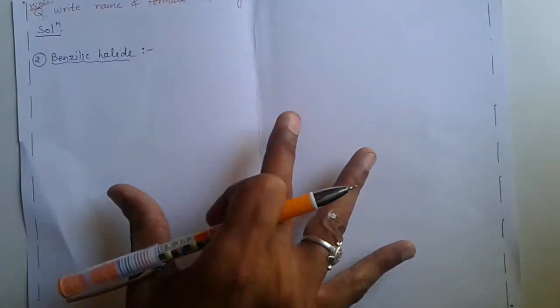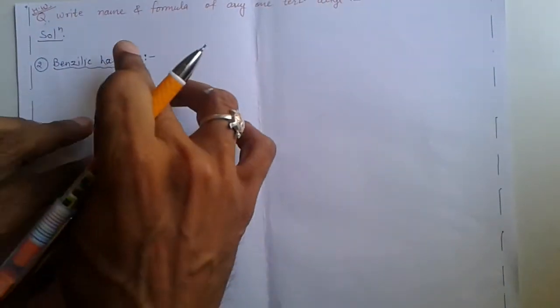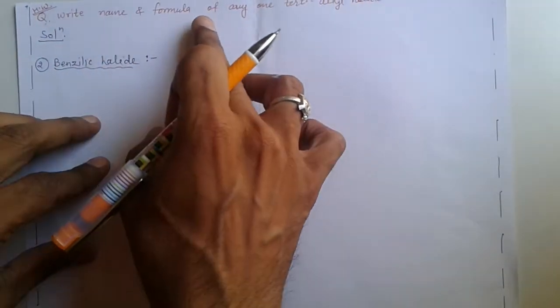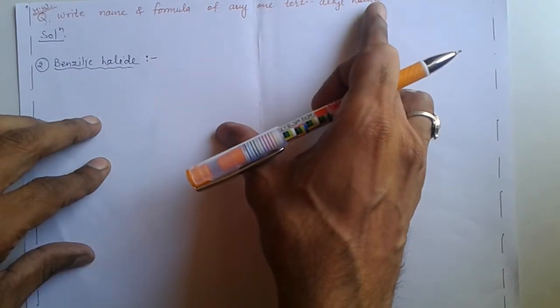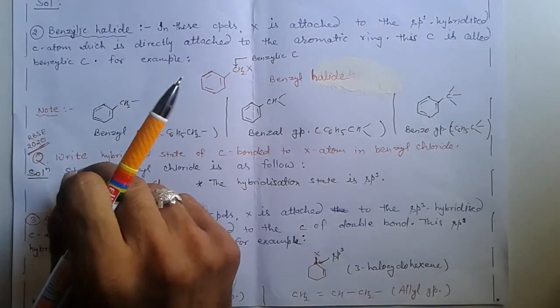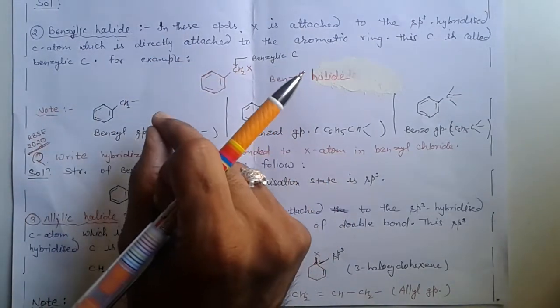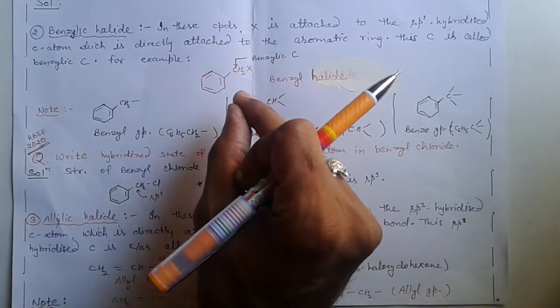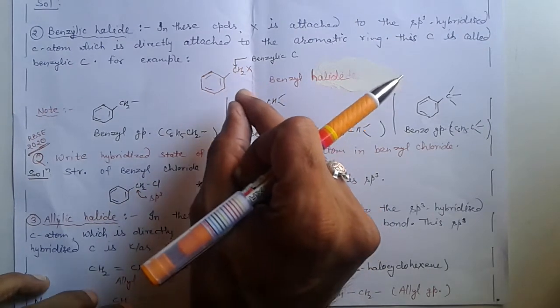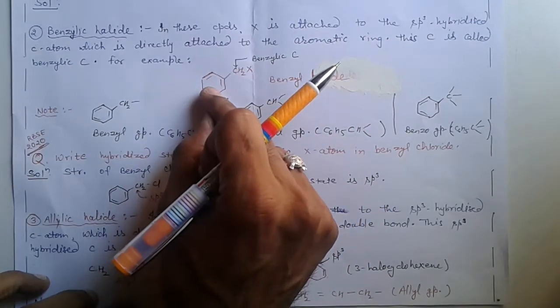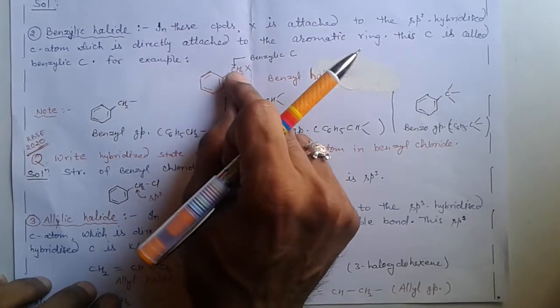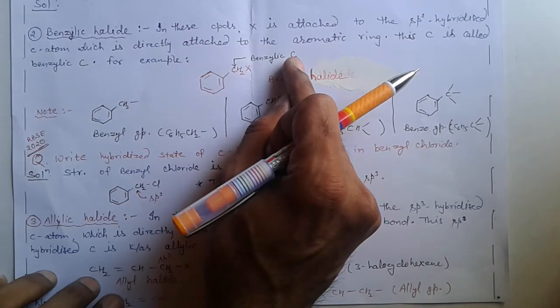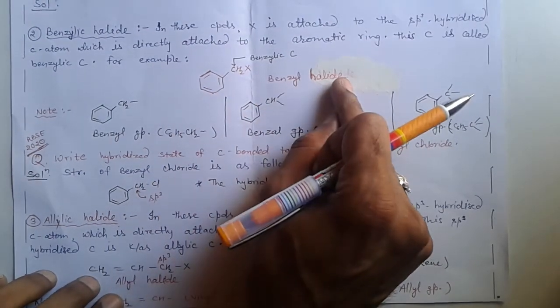For your homework, write the name and formula of any one tertiary alkyl halide. Next classification: type two, benzylic halide. In these compounds, halogen is directly attached to an sp3 hybridized carbon which is attached to a benzene ring. This carbon is known as the benzylic carbon. For example, benzyl halide.